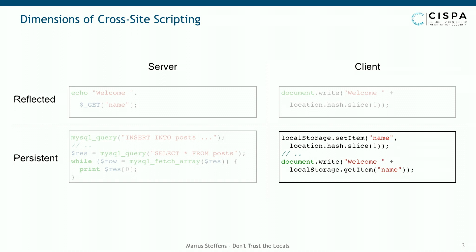You can see there is a local storage item being retrieved. Local storage is essentially a client-side database and it's being used within a code-executing context, that is document.write. What this allows an attacker who controls that particular storage entry is to add his HTML markup into the storage and thus get his code executed within the application.